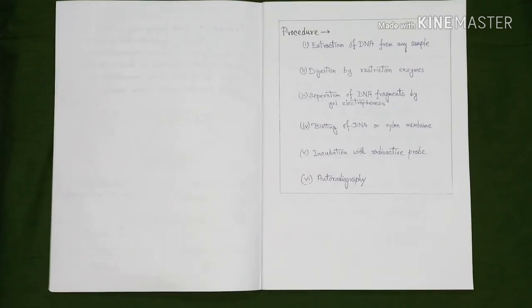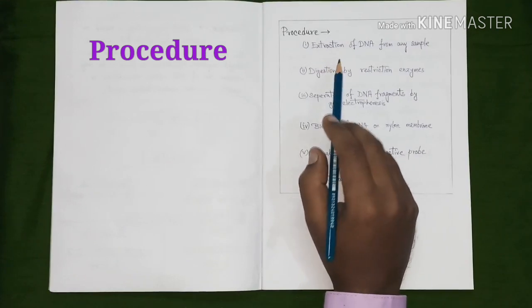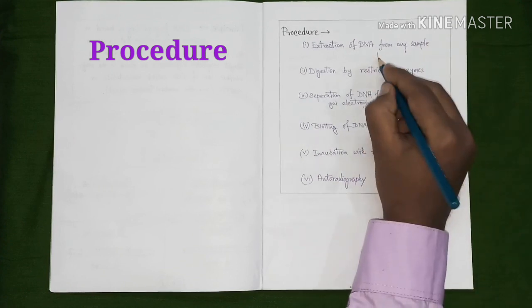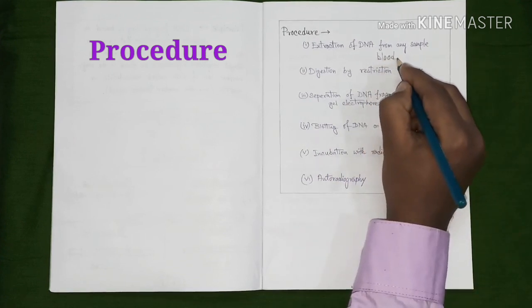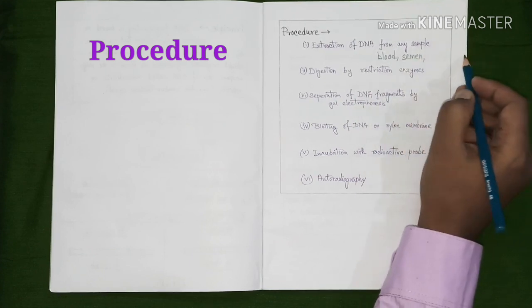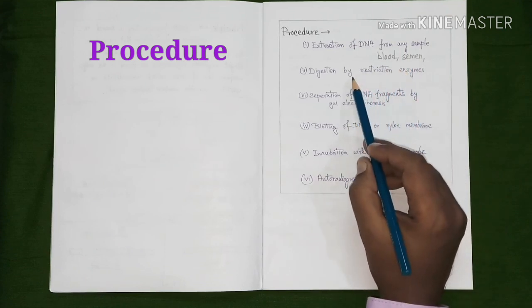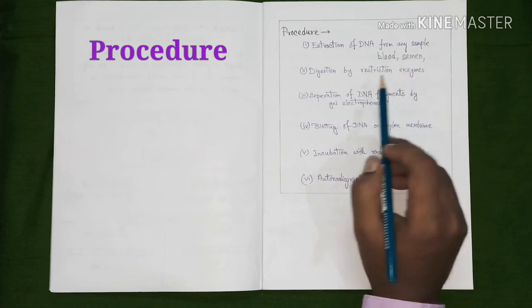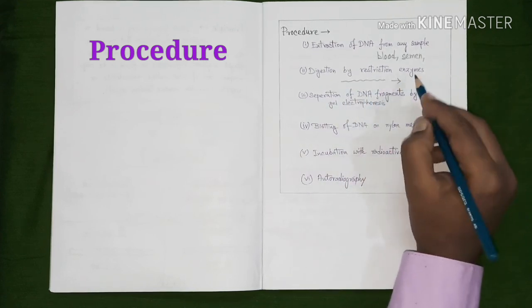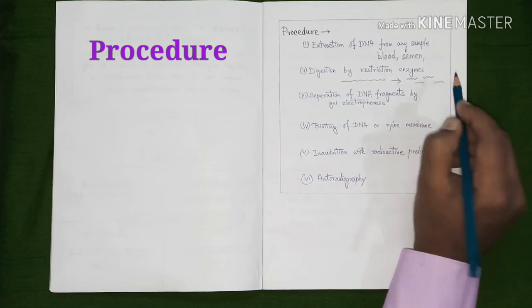Now we will discuss about the procedure of DNA fingerprinting. The first step of DNA fingerprinting is the extraction of DNA from any sample. The sample may be blood or semen or any other living substances. Then we have to digest that sample DNA by restriction endonuclease, so that a long stretch of DNA can be turned into small DNA fragments.